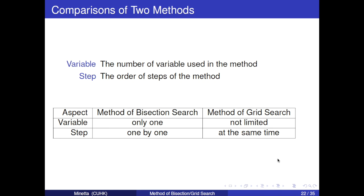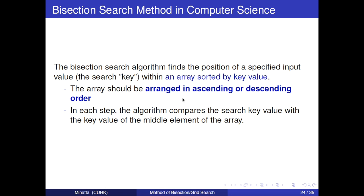We all know that most mathematical methods can be used in computer science, and so does bisection search method. It can be used to find the position of a specific input value within an array sorted by key value. You should notice that the array should be arranged in ascending or descending order. And then, in each step, the method compares the search key value with the key value of the middle element of the array.